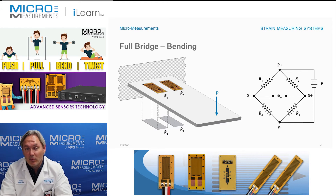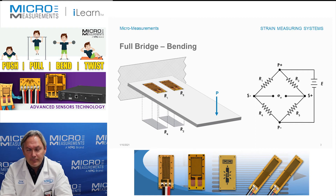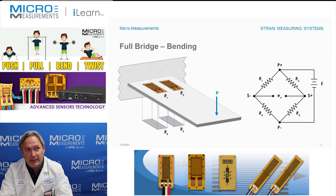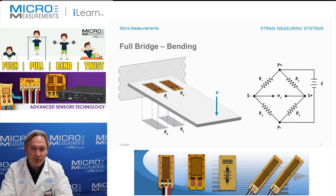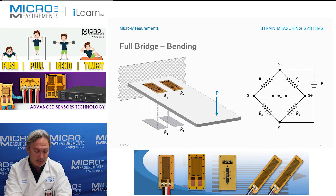Now we've got four gauges instead of just two. When we wire it correctly, for every thousand microstrain of strain in this cantilever beam, we get four thousand microstrain of output. This circuit is four times more sensitive than what you would find if you just had a single gauge mounted on this cantilever beam.